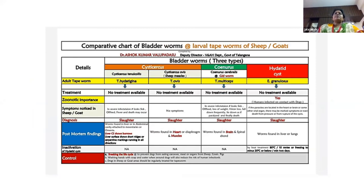This slide shows details of treatment measures as well as PM findings and control measures of important bladder worms of sheep and goat. No effective treatment is available up to now for the control of these bladder worms. Hydraten cysts will be having genetic importance, so it is better to educate humans about these bladder worms.